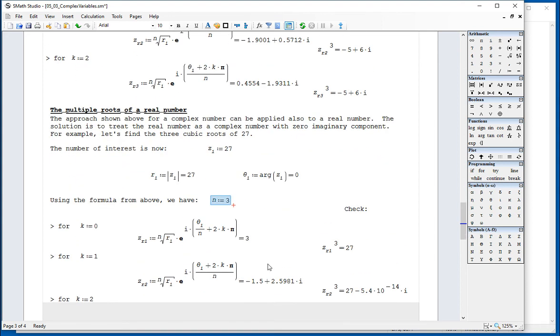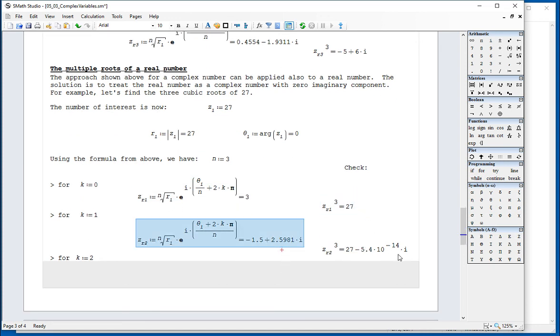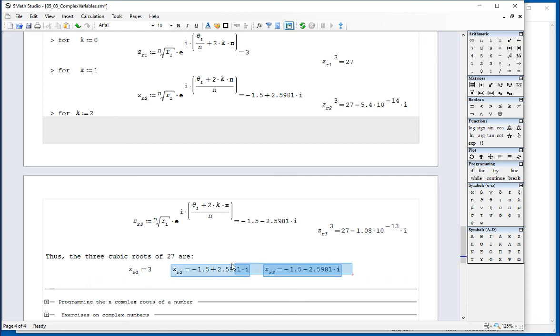And we start looking at the roots, 3, cubic root of 27. This one, cubic root of 27 with an imaginary part times minus 14, which is almost zero. And then the third root is this one. And this is the appropriate result. And so these are the three cubic roots of 27.